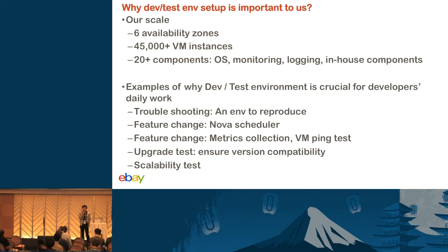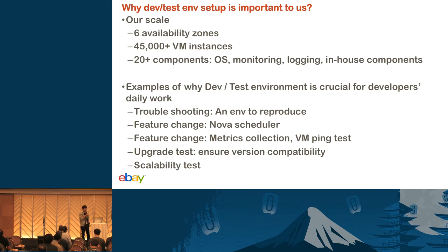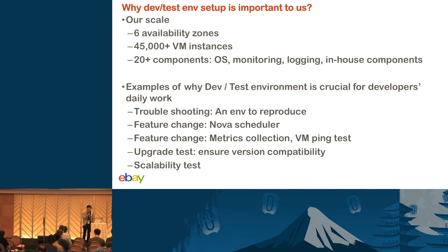So why do we have a specific topic on dev environment setup? First of all, look at the scale. We are running a pretty big OpenStack distribution on the eBay side, even after the split with PayPal. The scale is still pretty big, and we have more than 20 components running for this whole infrastructure as a service, including the core OpenStack services — Nova, Neutron, Keystone — and other services like monitoring and logging. So we want to find the same pattern to set up all these services for dev and test environments.